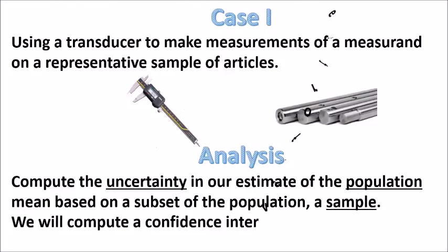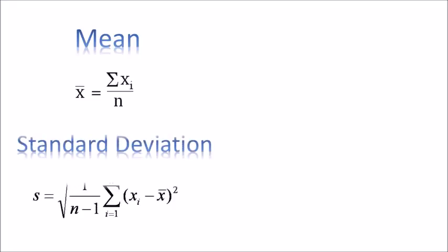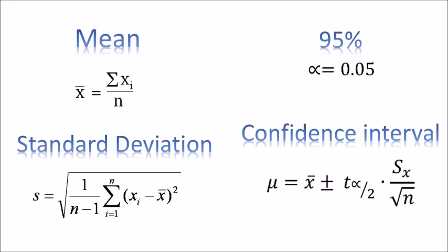We will compute a confidence interval for the population. The first step is to compute the sample mean, where n is the population size and xi is a value corresponding to each sample. Then you need to calculate the standard deviation, and finally the confidence interval. This part is called random error.